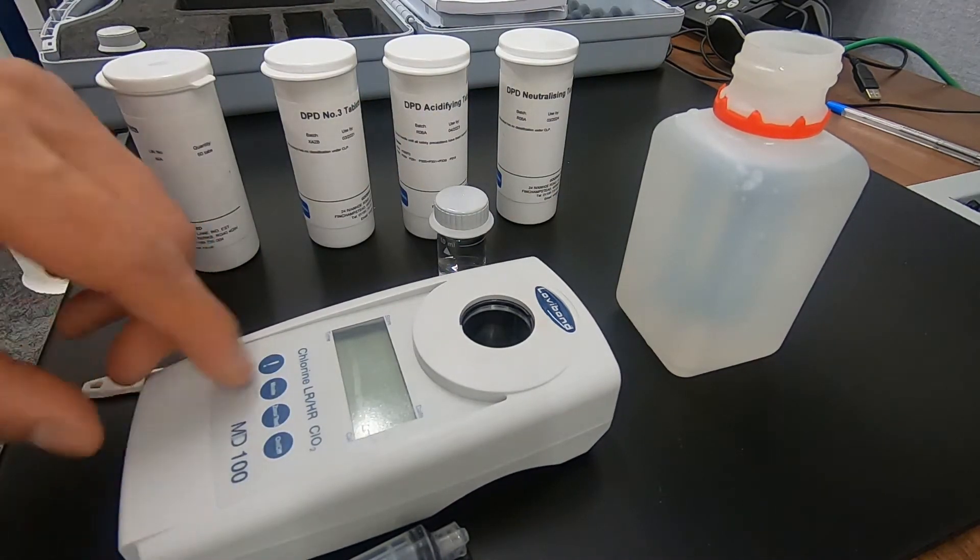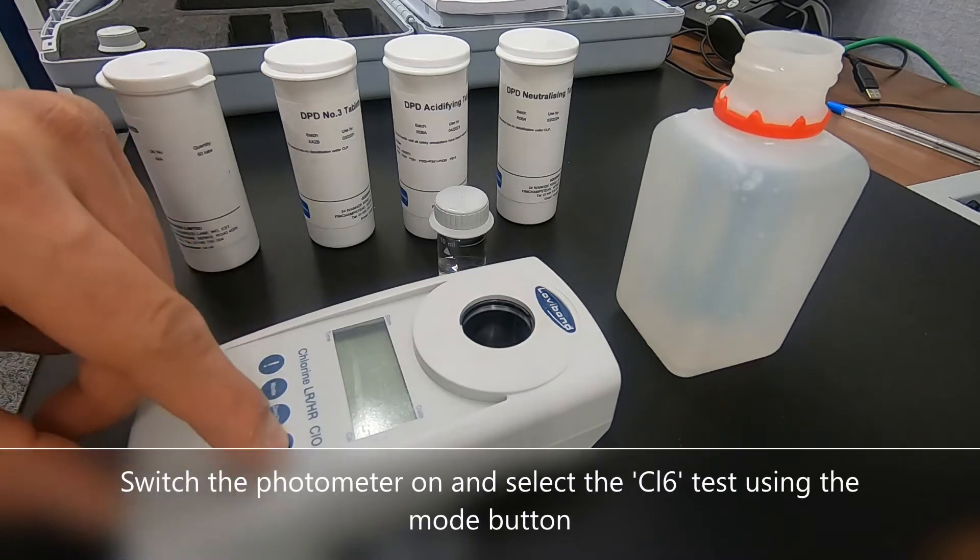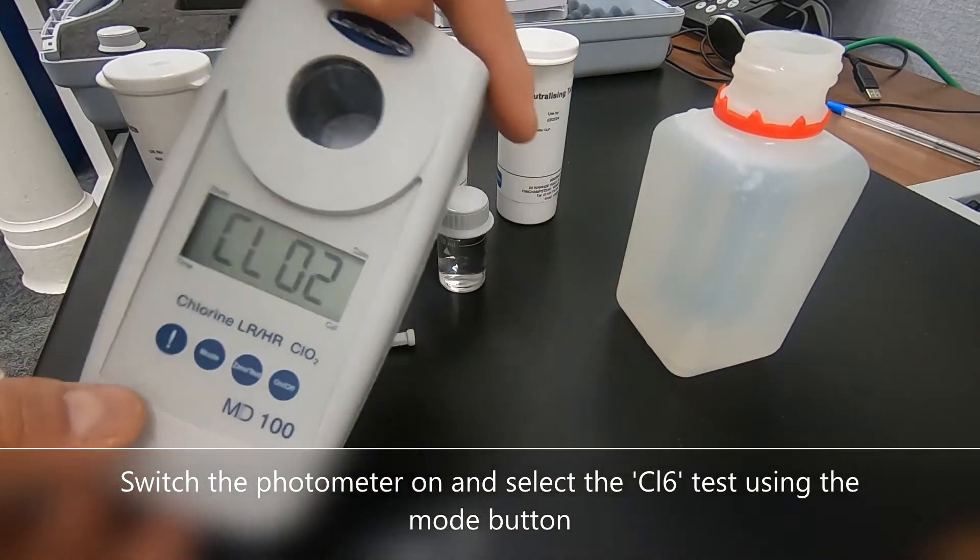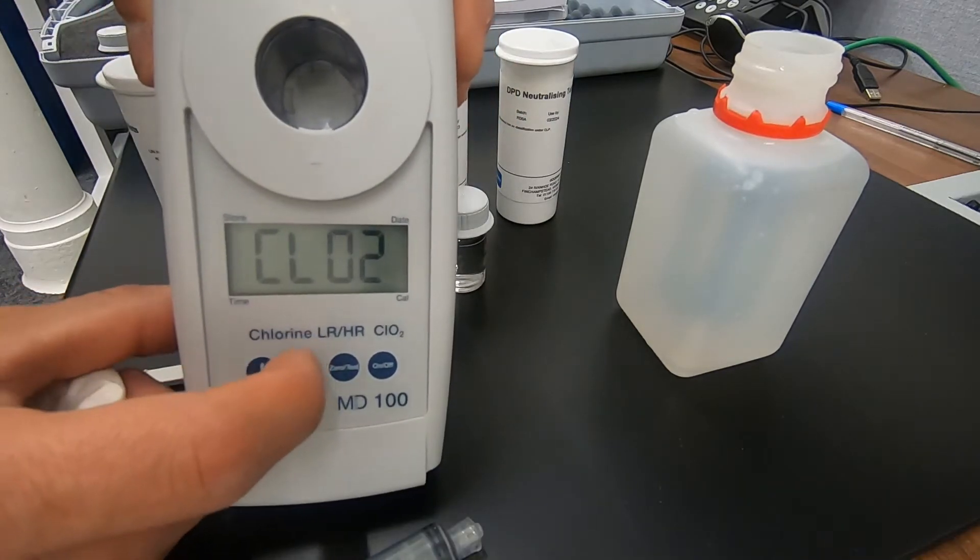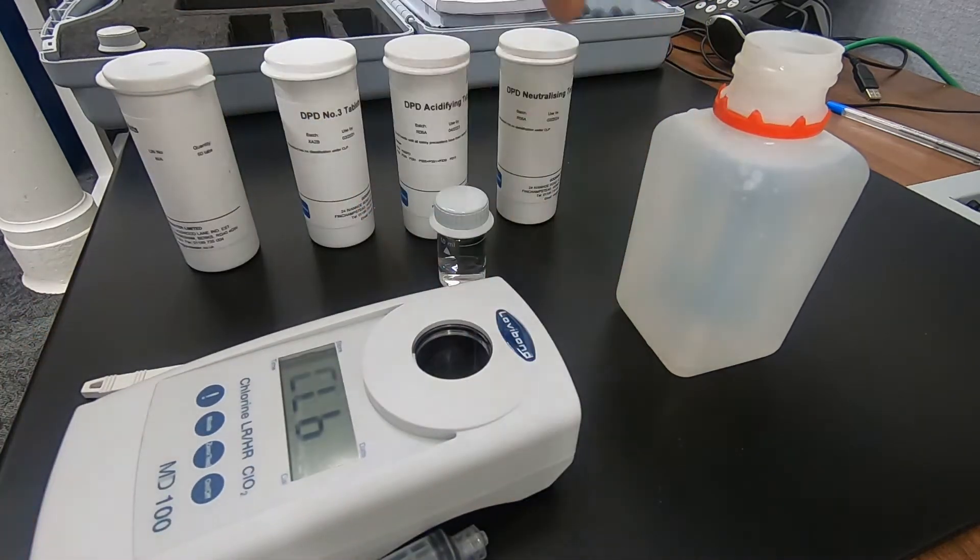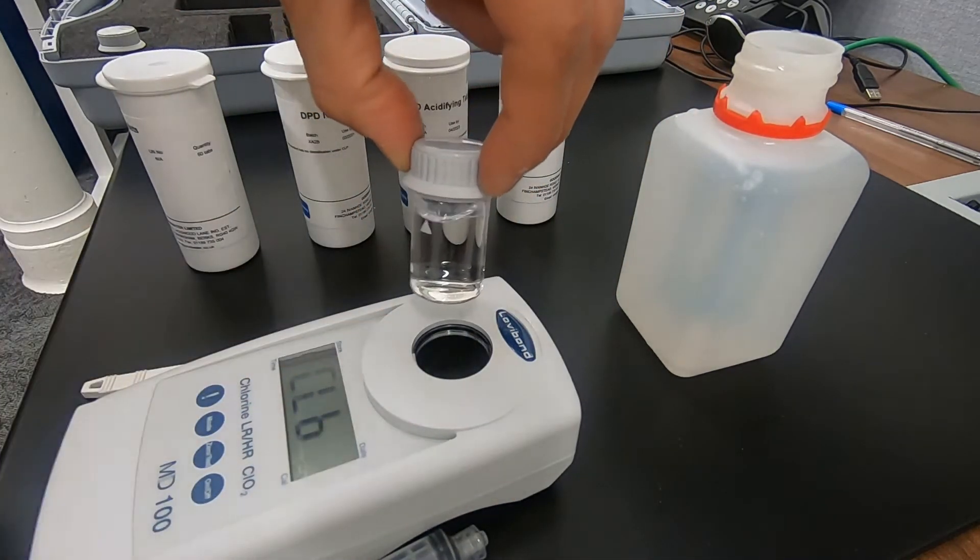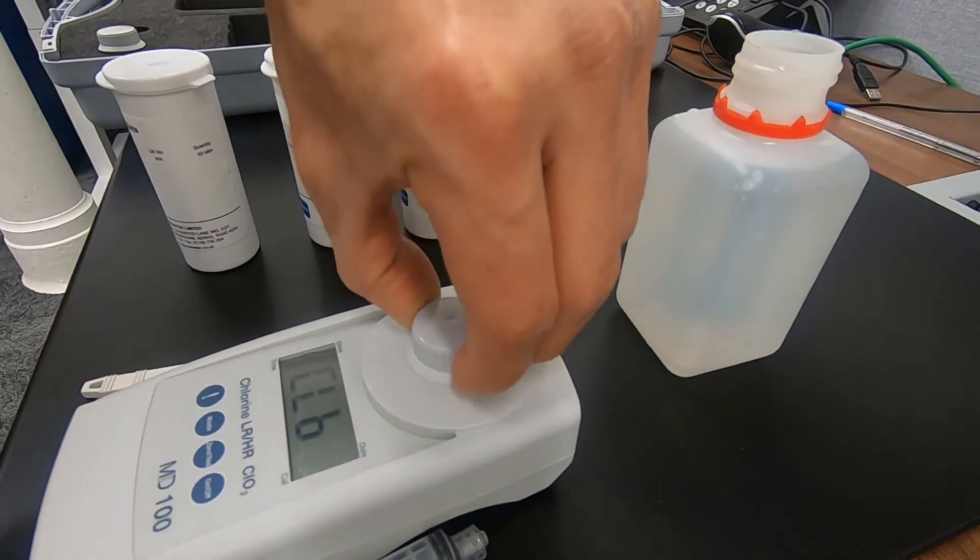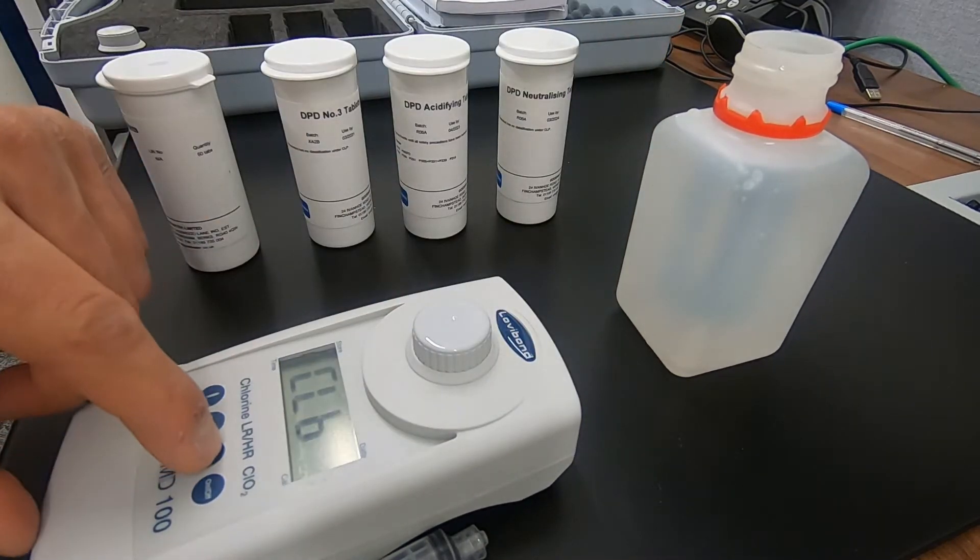For the total halogen test we switch the photometer on with the on-off key and we use the mode key to move to the CL6 program on the MD100. Place the vial into the photometer making sure to line up the arrows on the vial and the photometer itself and press the zero key.